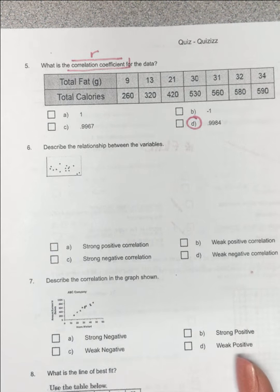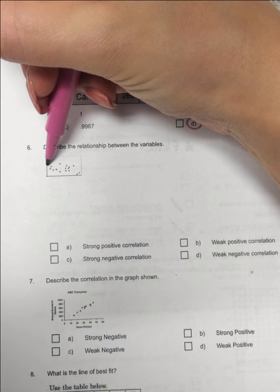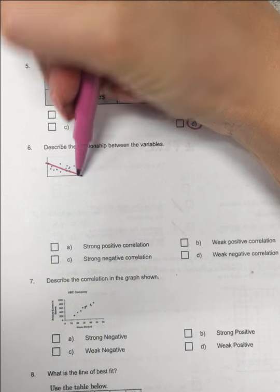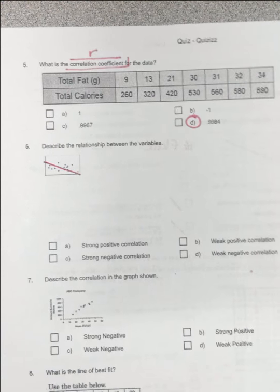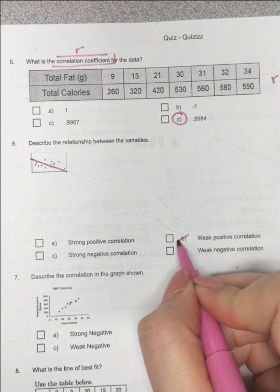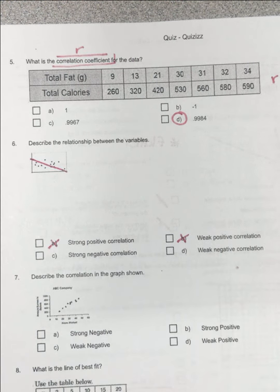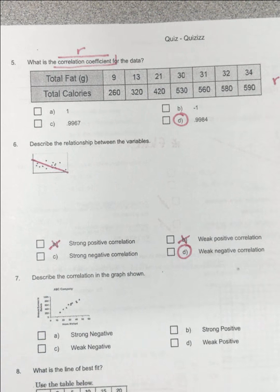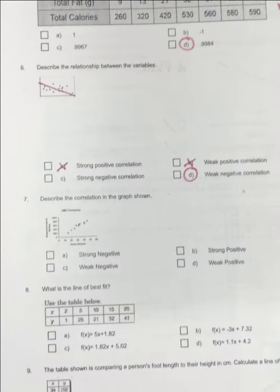Describe the relationship between the variables. So if I was to draw a trend line, I'd say it'd be going through there, so this is negative, so it's not B or A. And those dots are really spread out, so that's going to be weak. The more spread out the dots are, the weaker it is.